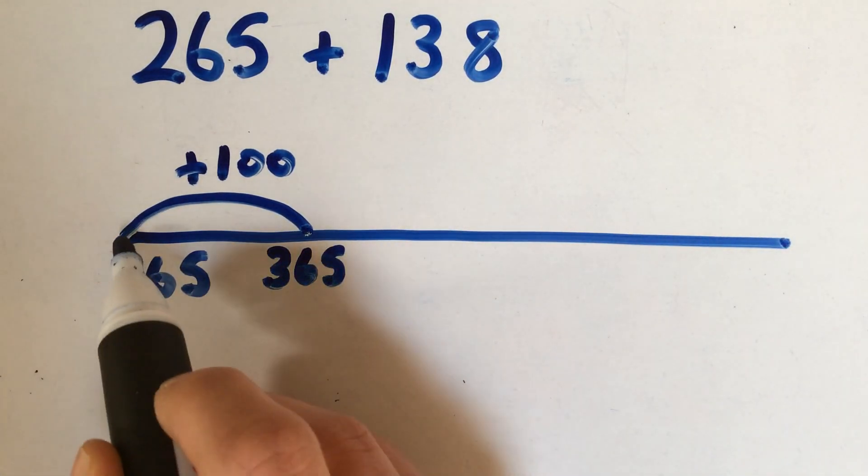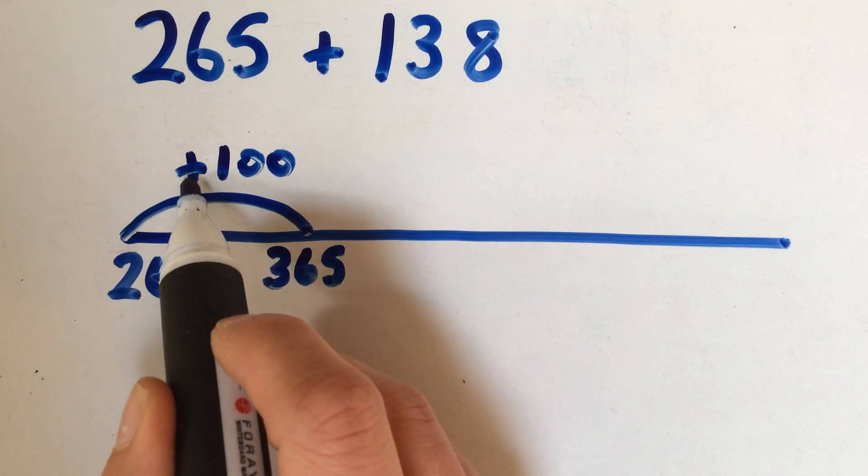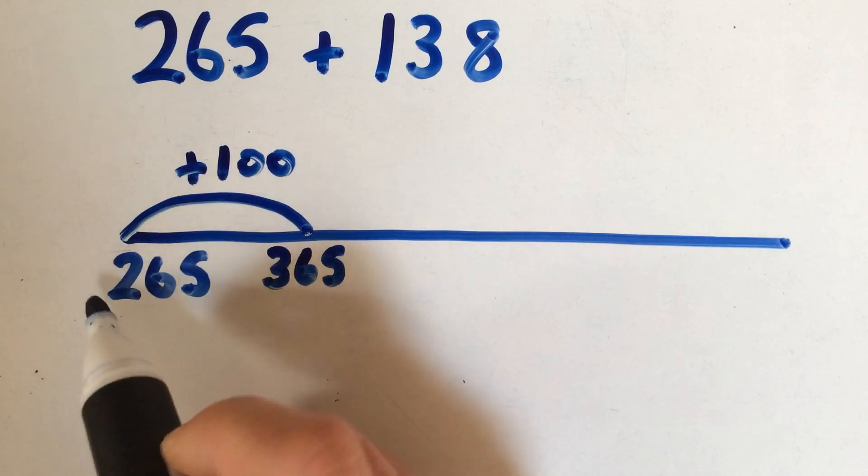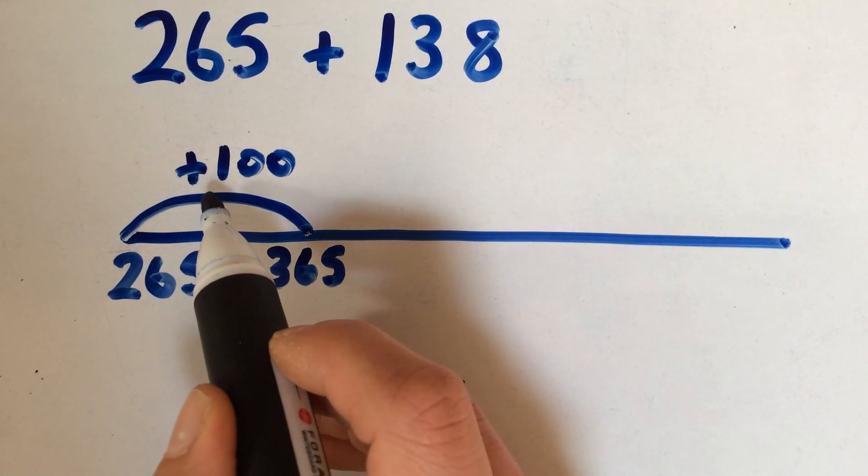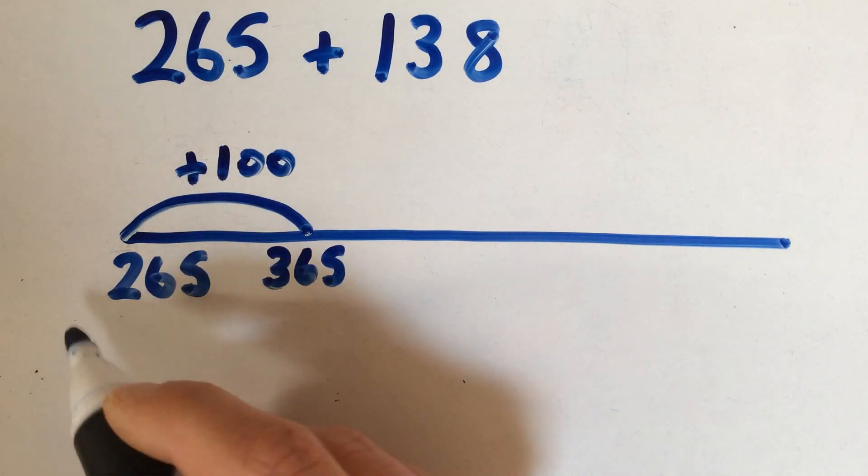The jump is marked by a little curvy line with the +100 written at the top there, just to make sure that the child keeps track of which bits of the number they're adding on.